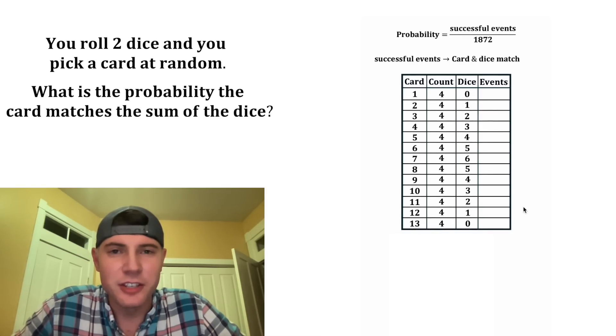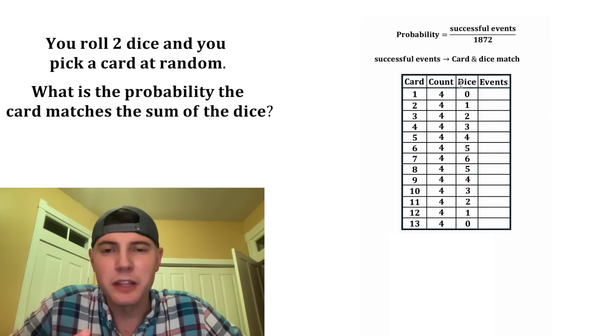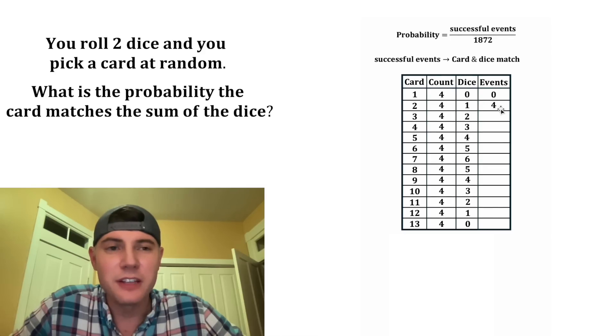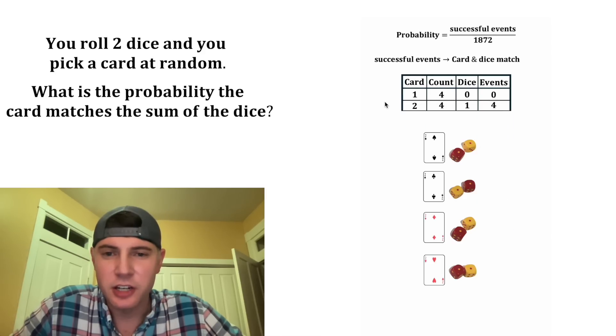Now we're interested in collecting all the successful events. We multiply the total possible cards times the total possible dice rolls that'll match. So there's 0 events for the ace card. 4 events would match a 2 card. And actually, I can show them right here.